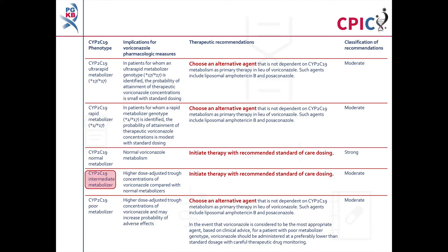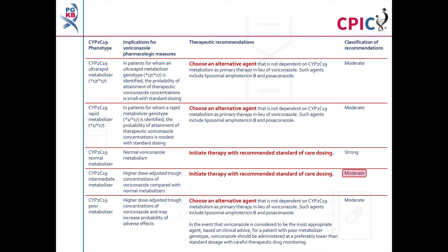Patients with a CYP2C19 intermediate metaboliser phenotype will have higher dose-adjusted trough concentrations of voriconazole compared to normal metabolisers. These patients can be given voriconazole with the recommended standard of care dosing. This is a moderate recommendation.